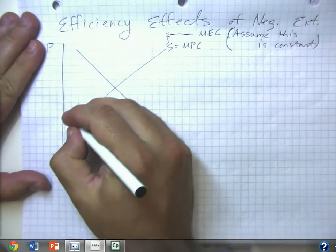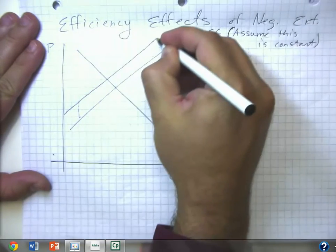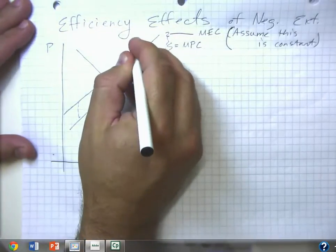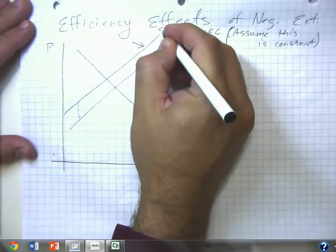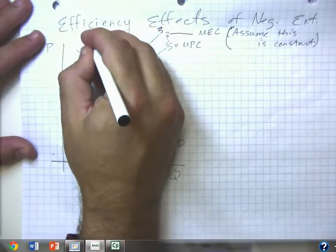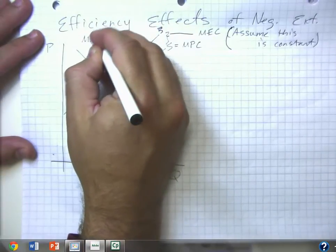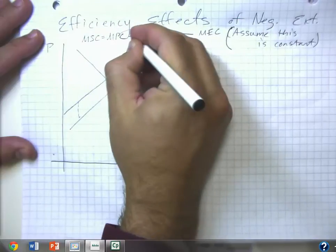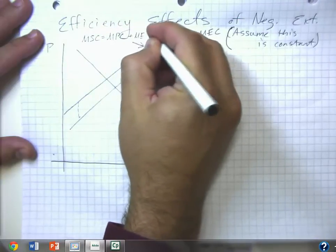In that case, the total costs, the all-inclusive costs, the true cost of production is here. And this would be the marginal social costs equal to the marginal private cost plus the marginal external cost.